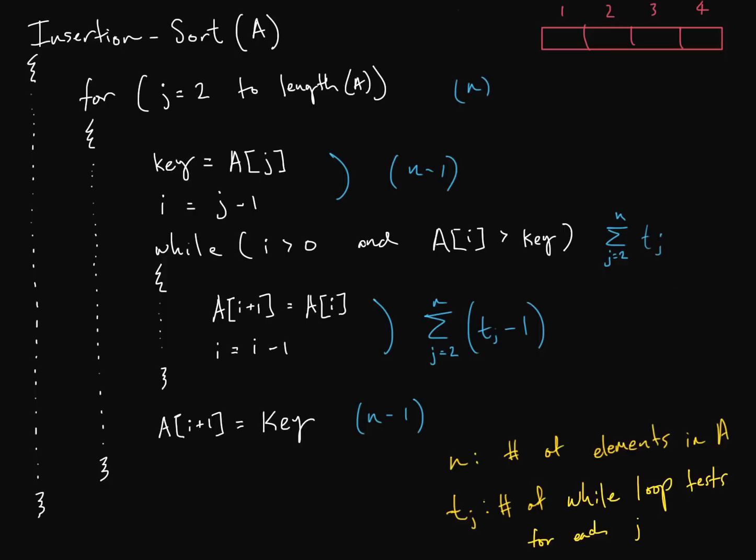What we're going to have to do when we try to compute this is we need to count how many times each one of these lines gets run. Once we can count those things, we're going to multiply each one of these by some constant, and that constant is basically the actual physical time that it would take for that line. It's going to be different for different computers and different hardware.